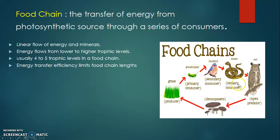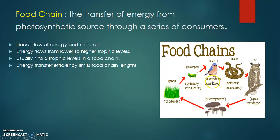How much energy is transferred? Basically, 10% energy is transferred from one trophic level to the next trophic level. There will be a linear flow of energy and minerals — always linear from one to next: primary, secondary, tertiary. Energy flows from lower to higher trophic levels; always from lower to higher, never from higher to lower.